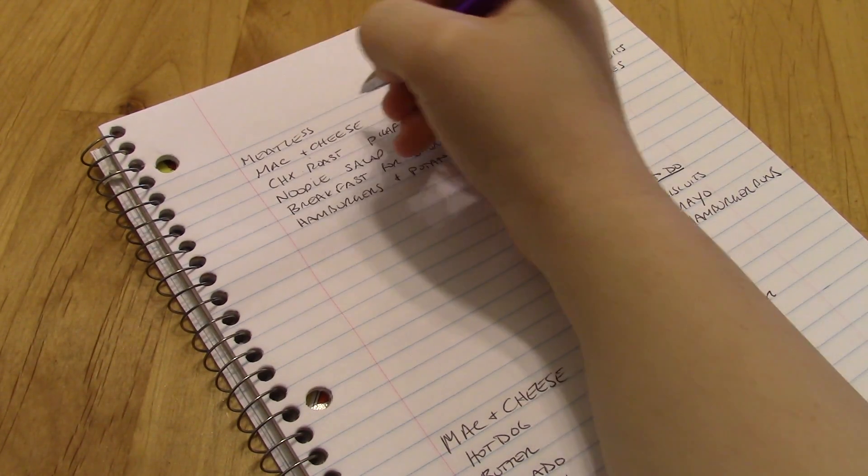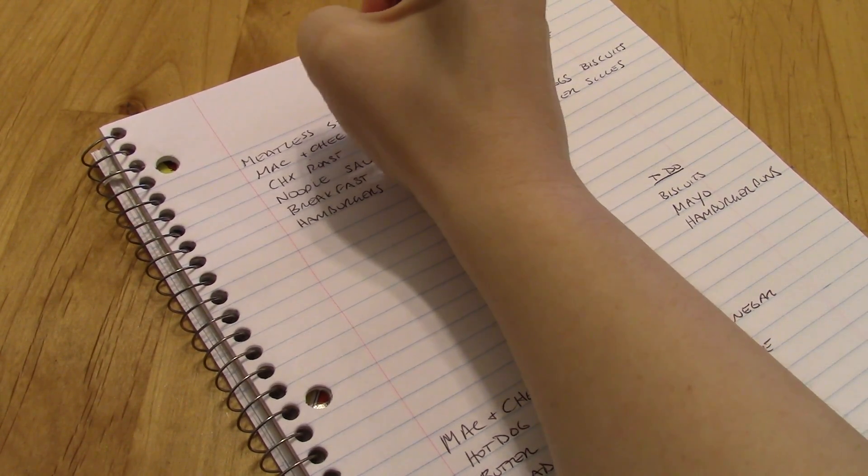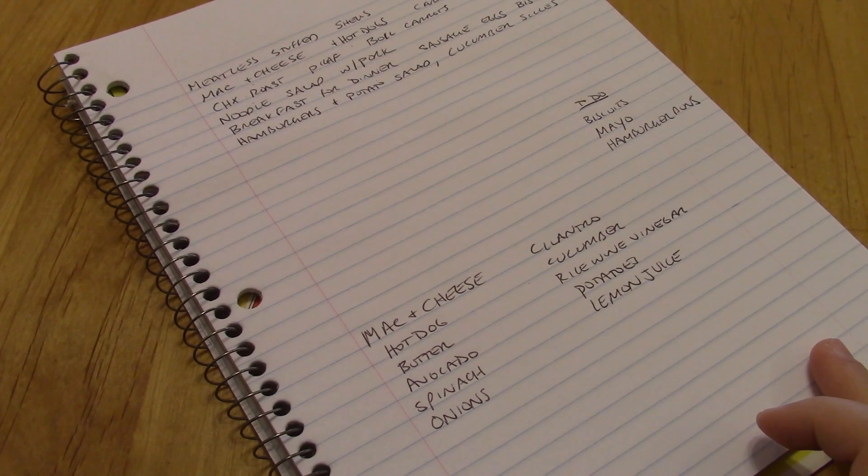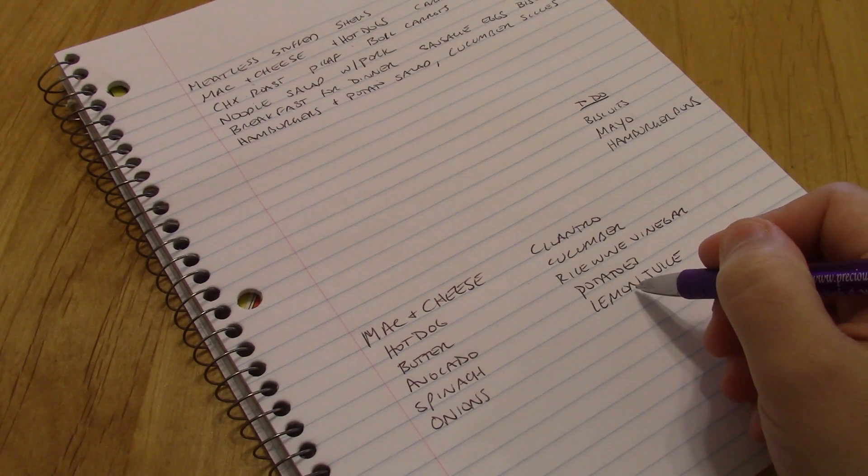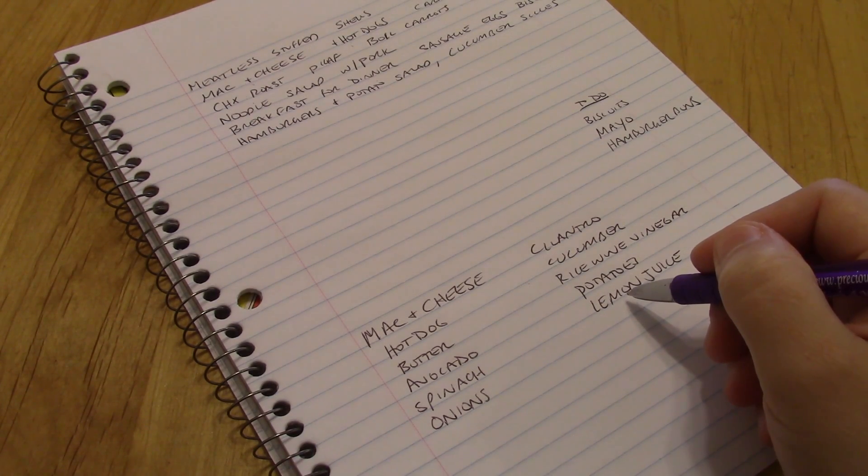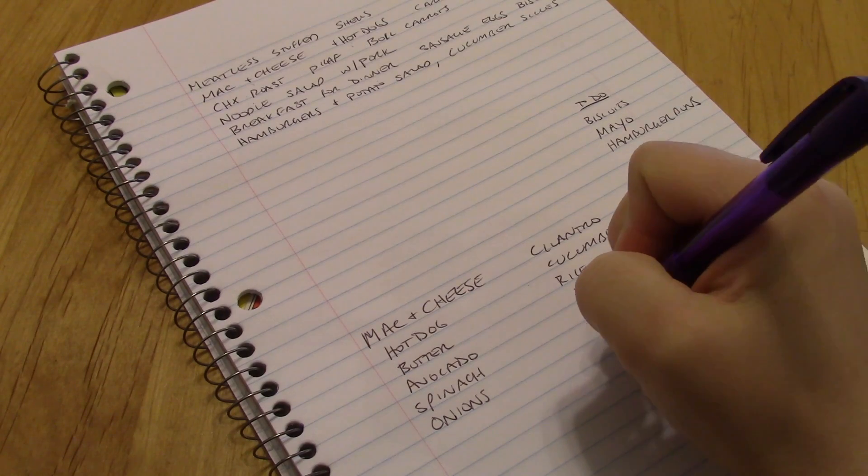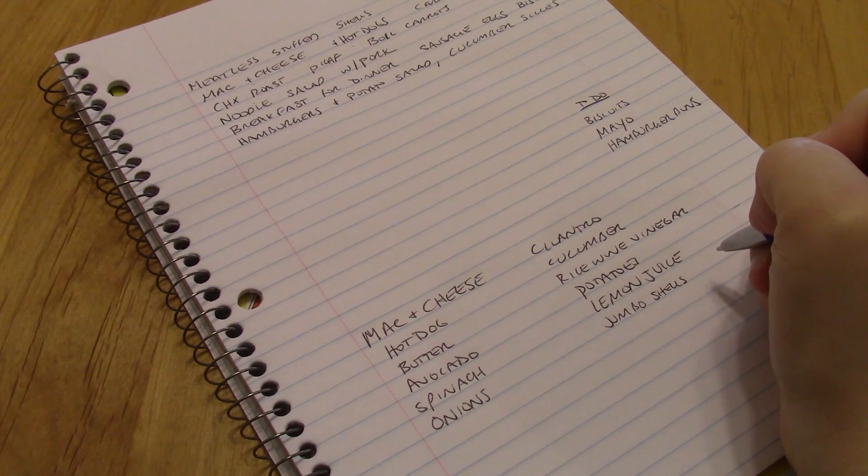I do have almonds, so let me write that down. Stuffed shells. I do have almonds to make the almond ricotta. You just soak almonds, peel them, and then grind them up with a little bit of water. And then I get lemon juice, which I think you need to add. I have parsley growing in the garden. I have nutritional yeast flakes. I do need to get the big pasta though, jumbo shells, or otherwise I'll just get lasagna noodles and make it into a lasagna. It's a pretty similar filling.